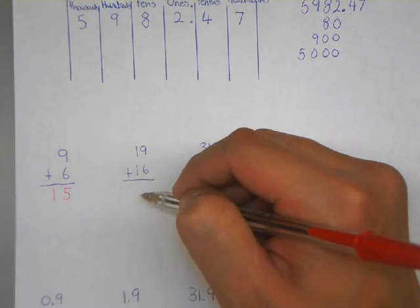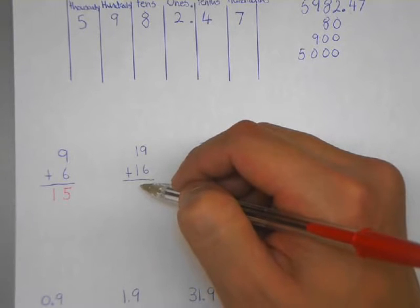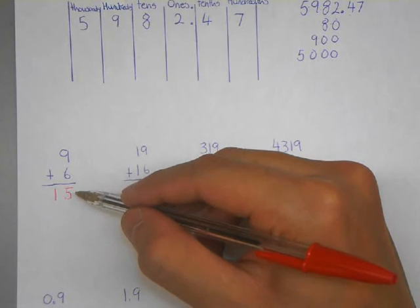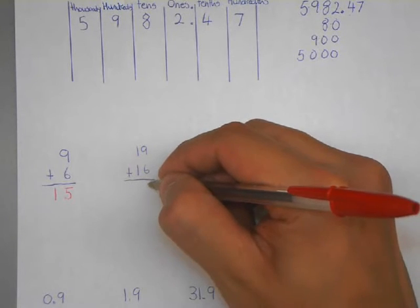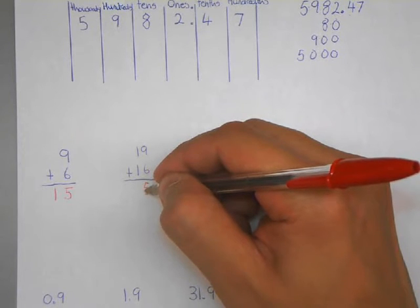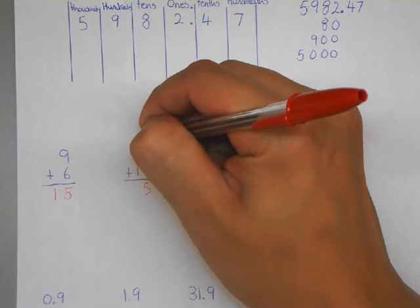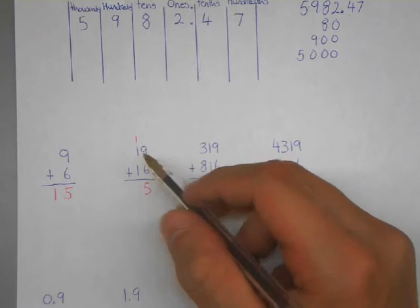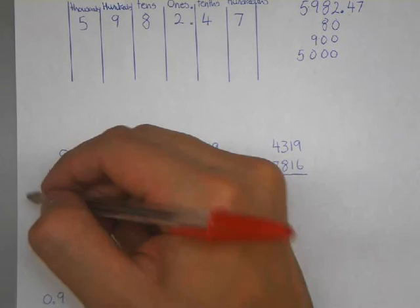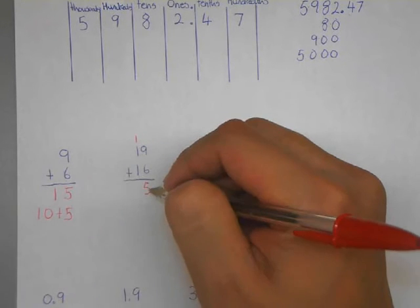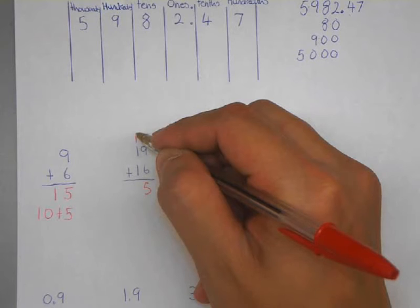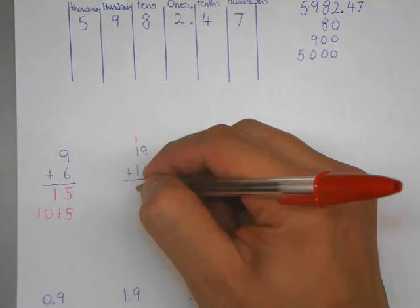What happens if we put a 2-digit by 2-digit problem? So 19 plus 16 — how do things change? We always start on the right side. So 9 plus 6 — we already know that's 15. We put the 5 in the 1s column where it belongs, but we don't put the 1 beside the 5. Instead, we write it on top in the 10s column, because that 1 represents 10. So we have 10 plus 5, which makes 15. Now we add all the numbers in the 10s column: 1 plus 1 plus 1 is 3. Our answer is 35.